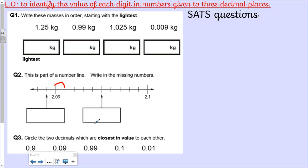This is a good one as well. Circle the two decimals which are closest in value to each other. Think about which ones are actually really close together. Again, a little bit of thinking on that one. It's not impossible, but it needs your brain to be switched on.